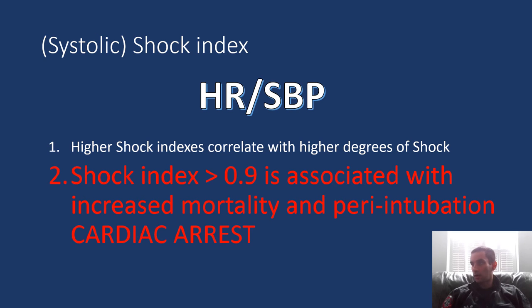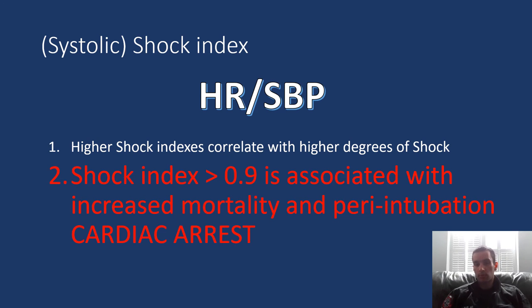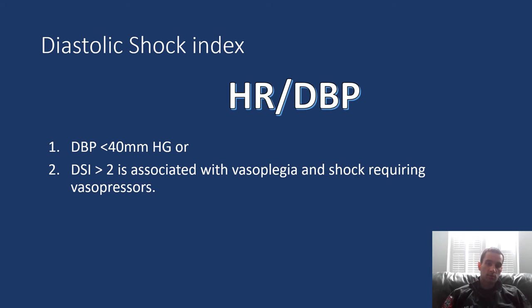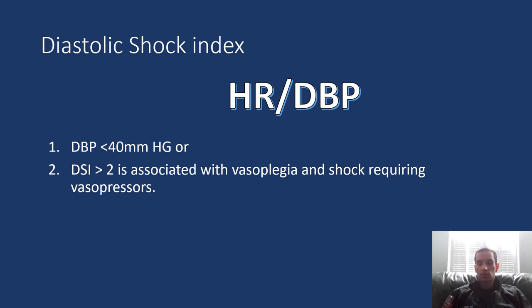For those who want more advanced vital sign interpretation, you can also use the shock index. Heart rate over systolic blood pressure helps in suspected hemorrhagic shock to gauge severity. Heart rate over diastolic blood pressure can give a clue about vasoplegic or distributive shock. These are more advanced concepts, but heart rate as an early clue is what everyone needs to know.